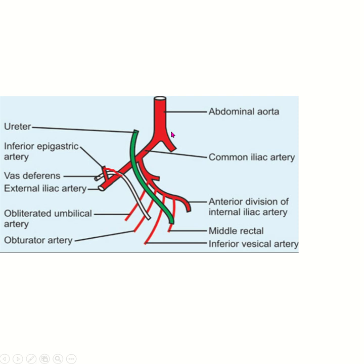The blood supply of the vas deferens. The common iliac artery gives rise to the external iliac artery, and from the external iliac artery arises the inferior epigastric artery. A branch from the inferior epigastric artery supplies the vas deferens.